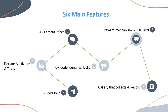Through brainstorming and focused discussions, we have designed six main features for this application. The first is a guided tour used to give directions to users. The second is clear activities and tasks. Third is AR camera effects. The fourth is QR code to identify tasks. Then there are reward mechanisms and fun facts. Finally, a gallery for users to connect and record.